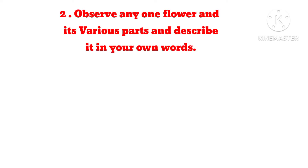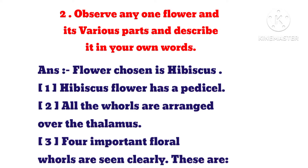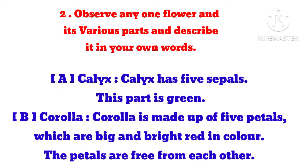Observe any one flower and its various parts and describe it in your own words. Answer: The flower chosen is hibiscus. The hibiscus flower has a pedicel. All the whorls are arranged over the thalamus. Four important floral whorls are seen clearly. These are: A. Calyx — the calyx has 5 sepals and this part is green.